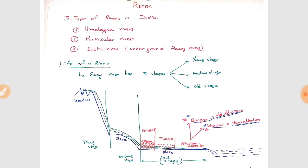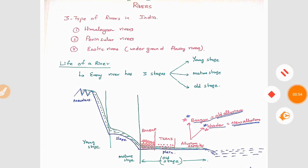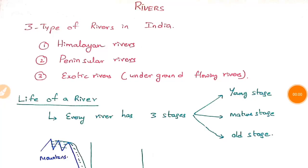Welcome to Sunil Engineering Academy. I'm Bharat and we are looking into the Geography series of lectures. This is Class 4 on River System in India. There are three types of river systems in India: Himalayan rivers, peninsular rivers, and exotic or underground flowing rivers.